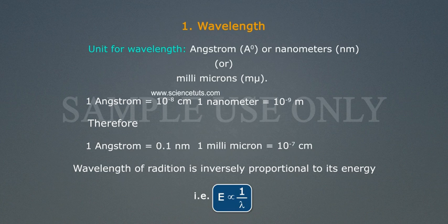1 nanometer is equal to 10^-9 m. Therefore, 1 Angstrom is equal to 0.1 nm. 1 millimicron is equal to 10^-7 cm.